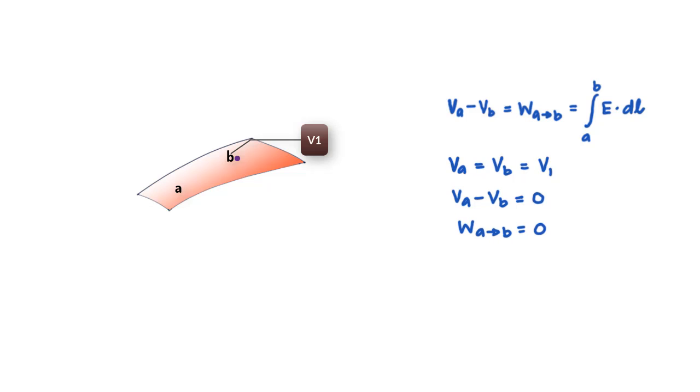And you would also realize that since work done is path independent, you can move the charge from A to B taking any path. That is, you can move it in a crazy curve or go up and down, but as long as your destination is B from A, the change in potential will be 0 and therefore the work done will also be 0.